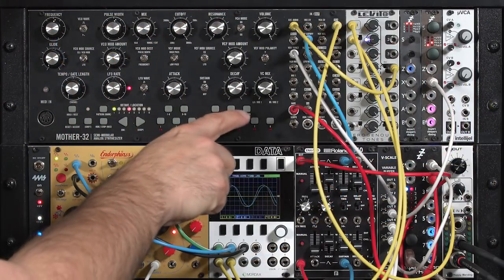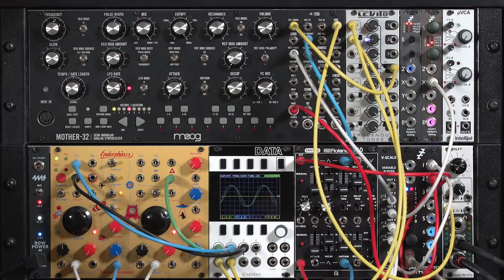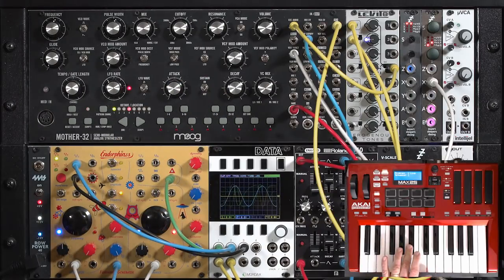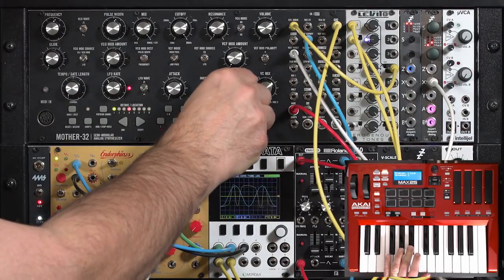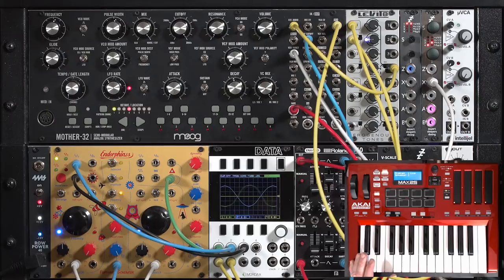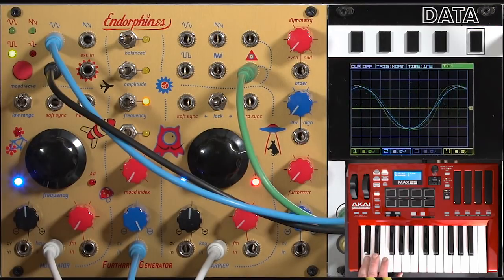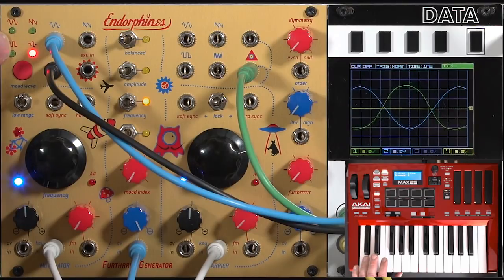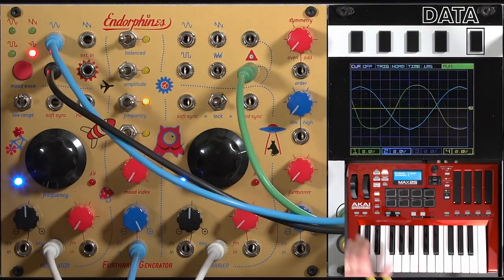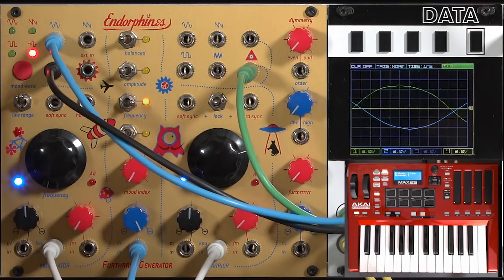So I'm going to turn off drone. I'm going to change the VCA envelope on the mother to turn off the sustain, so it's only an attack decay envelope. And now you can hear the percussion potential of exponential FM modulation. Noise modulation makes particularly good drums. Oh yeah, that's not a bad kick drum, actually.